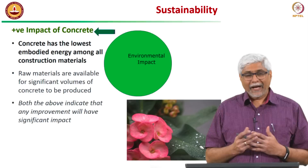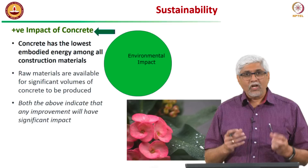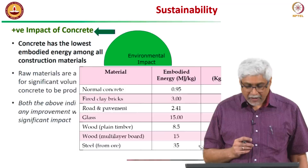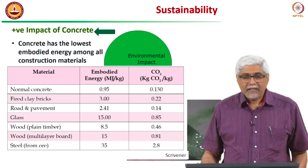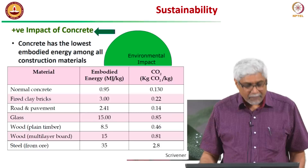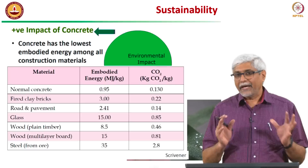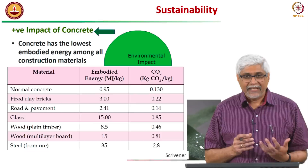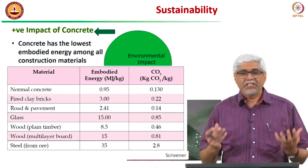Something can also be good or bad, and we need not always focus on what is bad for the environment. If we look at the positive impact of concrete on the environment, we know that concrete has the lowest embodied energy among all construction materials. Looking at a table borrowed from Karen Scrivener, it shows the embodied energy and CO2 emissions for 1 kilogram of different materials — concrete, bricks, road and pavement materials, glass, wood, and steel — and concrete has the least embodied energy.